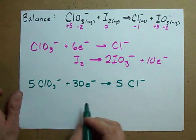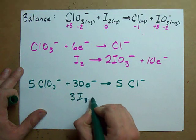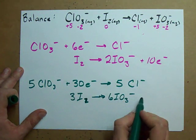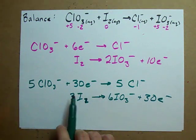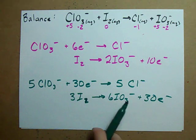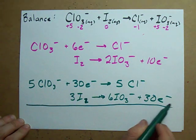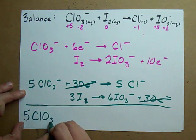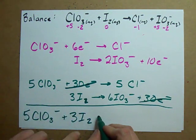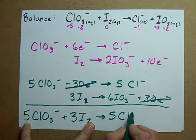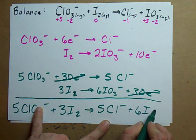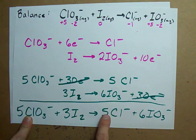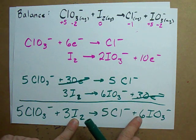We want this to be 30 as well, so we multiply each of those by 3. 3 I2's, 6 IO3 minuses, and 30 electrons. Notice now that in this reaction, 30 electrons are gained. In this reaction, 30 electrons are lost. When you add these two together, the electrons cancel each other out, and you're left with 5 Chlorate, 3 I2's, combining to form 5 Chlorides, and 6 Iodates. Notice now, 5 Chlorines on this side, 5 Chlorines on that side, 6 Iodines on this side, 6 Iodines on that side.